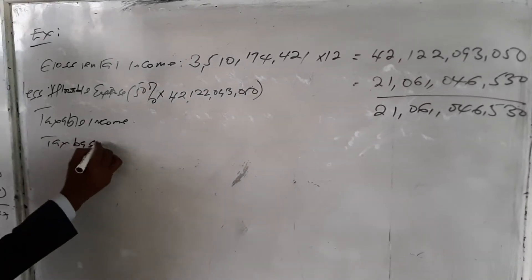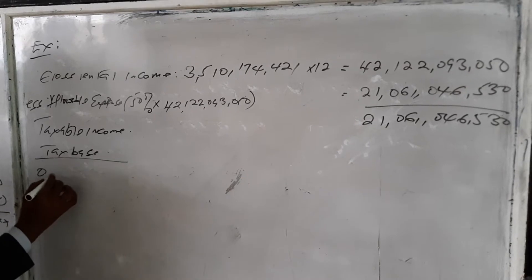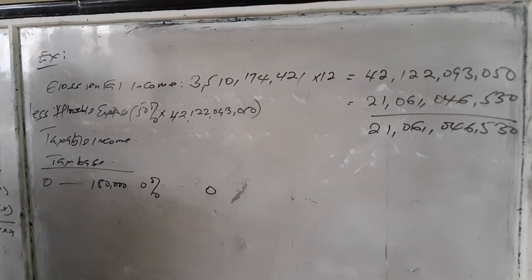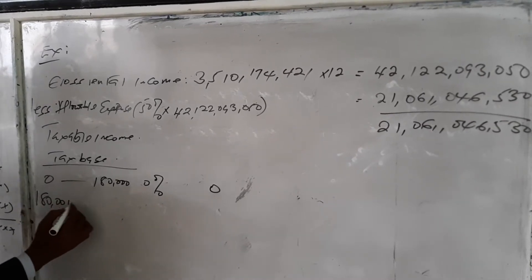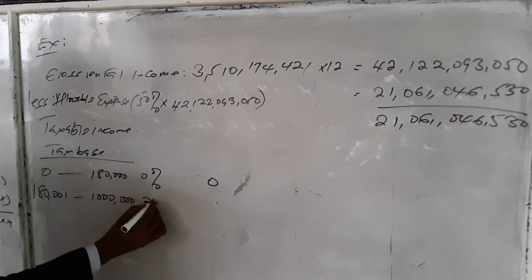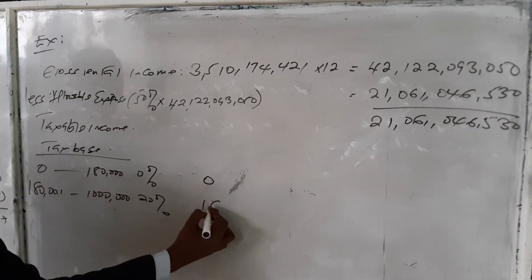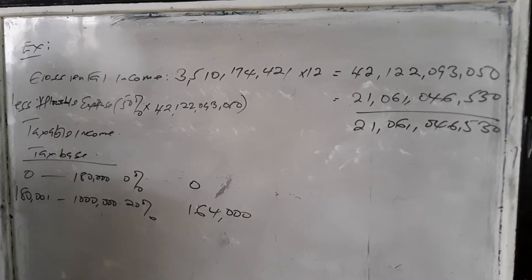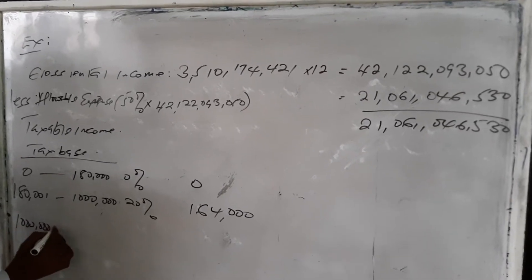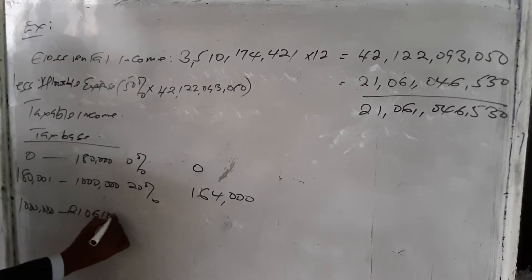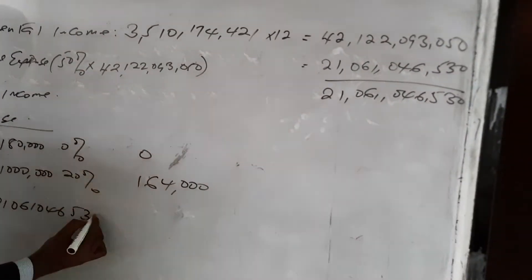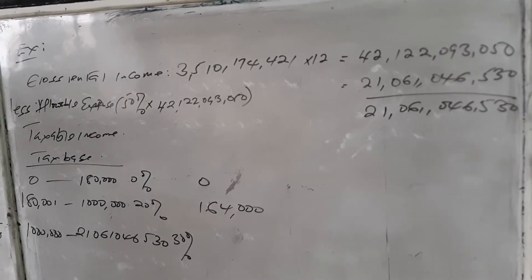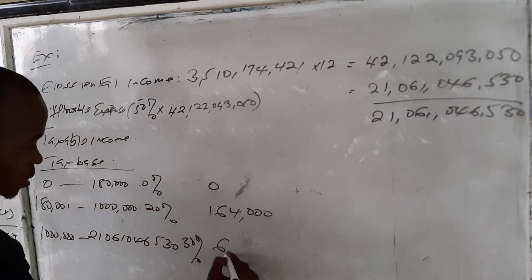I calculate the tax base. From 0 to 180, it is 0%, which gives me 0. From 180,001 to 1 million, it is 20%, which gives me 164,000. Since 21 million is greater than 1 million, we need to less 1 million first of all, then we apply 30%, which gives 6 millions.